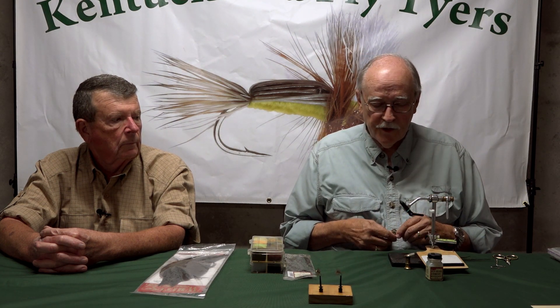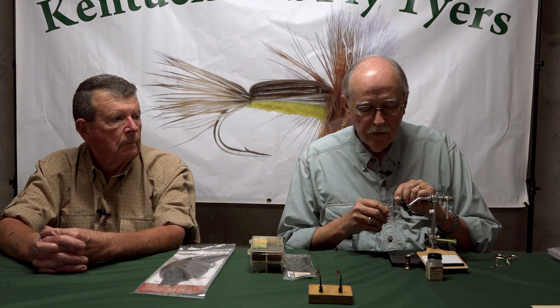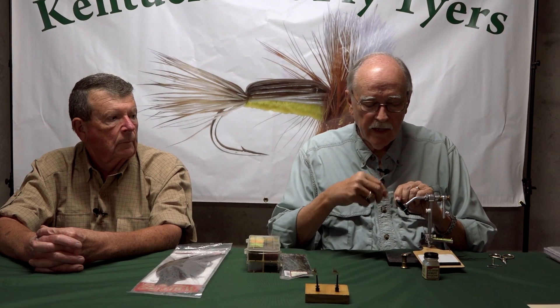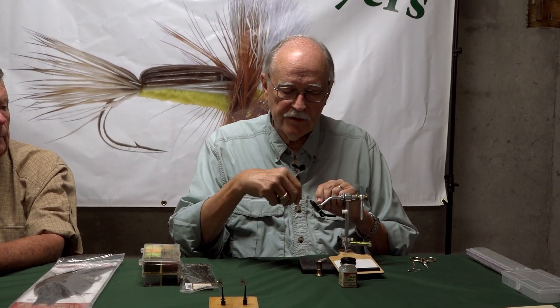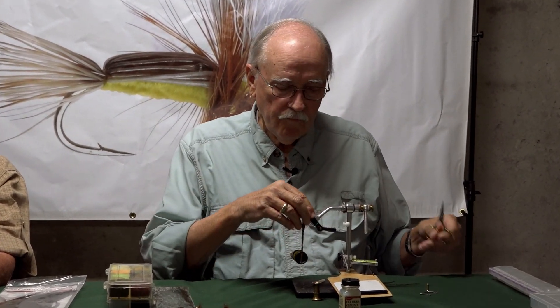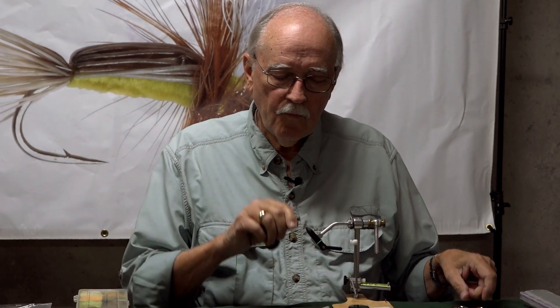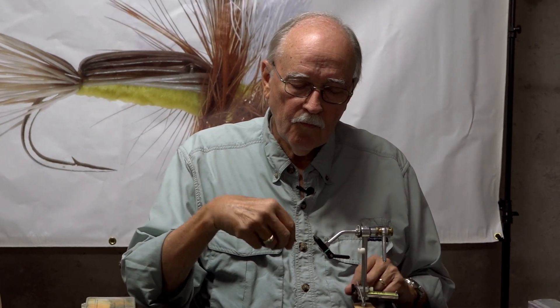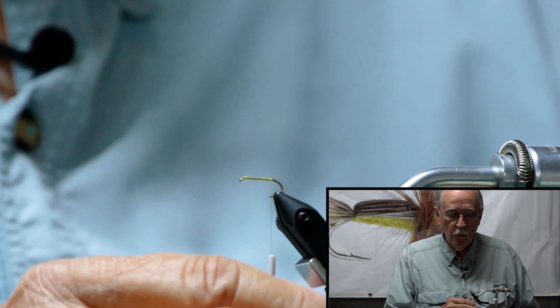It's a good fly. Now you have caught fish on this one. We're tying it with six-aught thread. This is a gold thread. Start behind the eye. I'm going to lay down the base of the thread, go all the way over back to where the barb would have been.